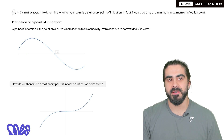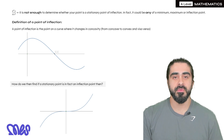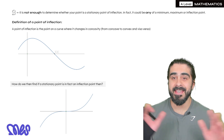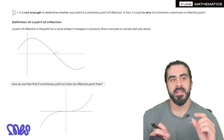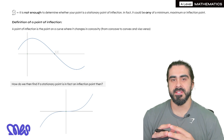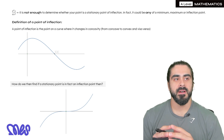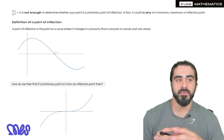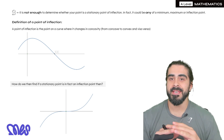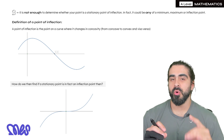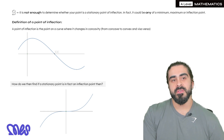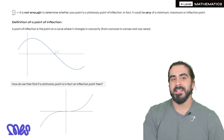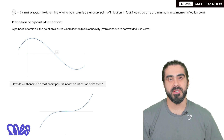The second derivative being zero is actually not enough to determine whether your point is a stationary point of inflection. In fact, if you find the second derivative to be zero, it could be a minimum, maximum, or inflection point. The condition is: we've already found dy/dx = 0 and located the stationary point — but if the second derivative is also zero there, it could be anything. So the second derivative being zero does not necessarily imply a stationary point of inflection.